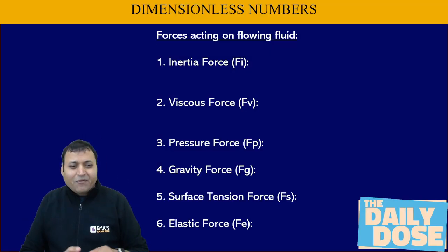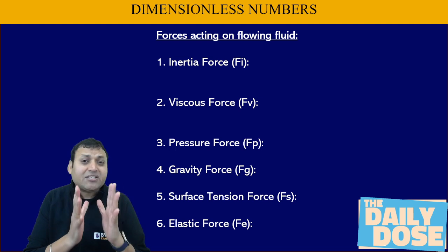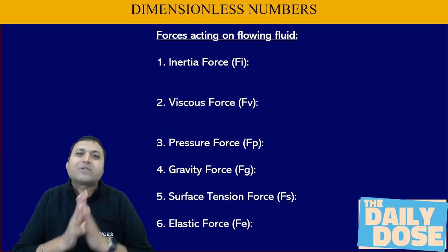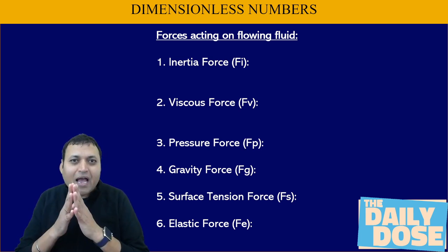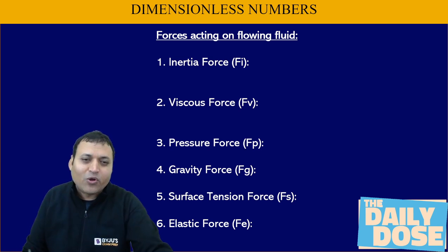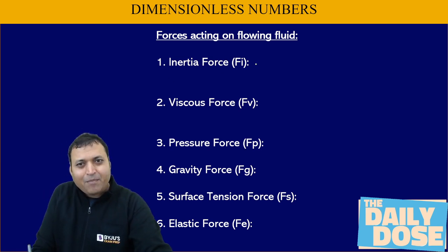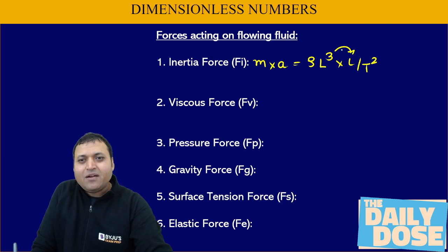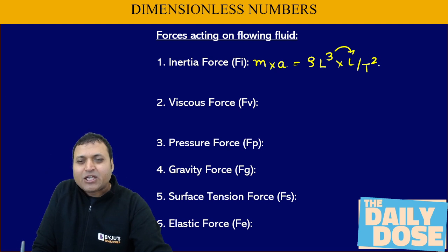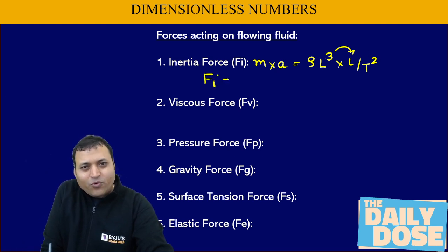Dimensionless numbers are actually the ratio of various forces. First of all, we need to understand what are the major forces applied on the flowing fluid. One of the major forces applied is inertia force, that is mass into acceleration. Mass is density into volume, that is rho times L-cubed, and acceleration is L by T-squared. Taking one L across, L-squared by T-squared becomes V-squared. So inertia force equals rho L-squared V-squared.